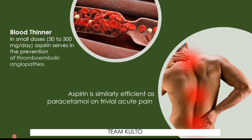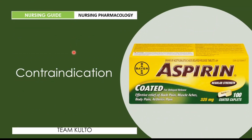In small doses of 300 to 325 milligrams per day, aspirin serves as prevention of thromboembolic angiopathies. It is used as secondary prophylaxis for coronary heart disease after myocardial infarction or bypass operation. Aspirin is also used after transient ischemic attacks, cerebrovascular accidents, and for peripheral occlusive arterial disease. To summarize: aspirin can be used for acute pain and as a blood thinner.